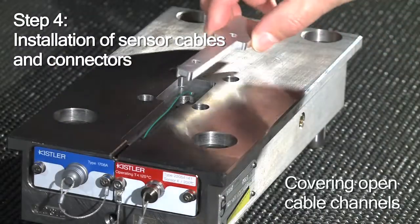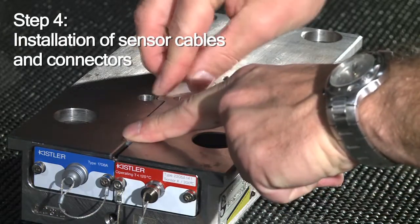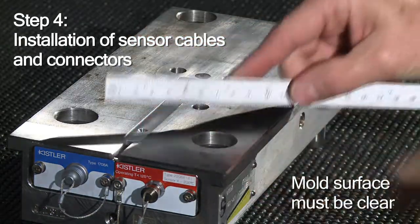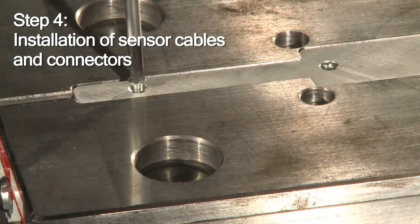In some cases, your mold has open cable channels. To prevent damage, you should protect them using a metal cover. Make sure it's a tight fit and the mold surface is clear.